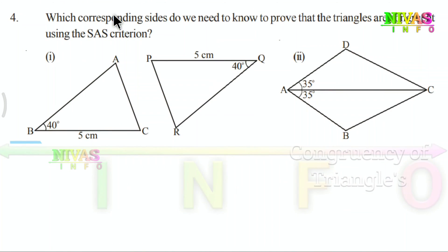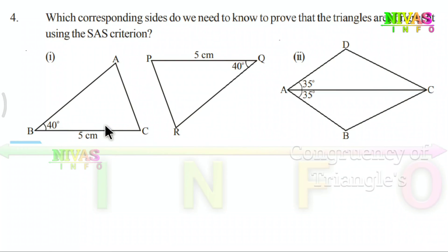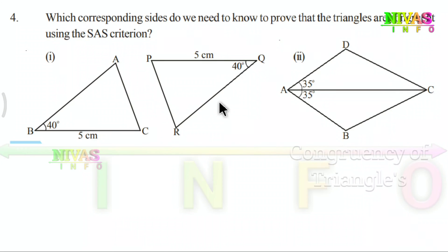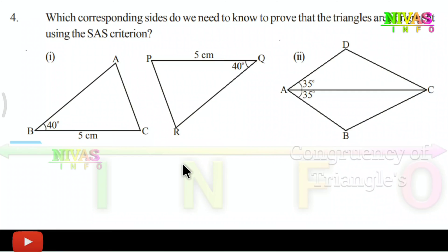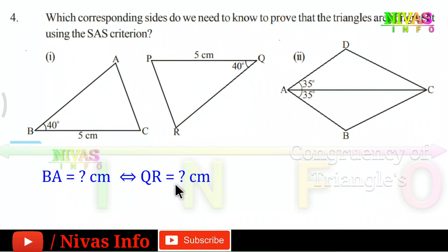We have the next question: Which corresponding sides do we need to know to prove that the triangles are congruent using the SAS criterion? Here we have two problems. We compare the same sides. First one: angle B is 40 degrees and angle Q is 40 degrees, so one angle is equal. Next, BC is 5 cm and QP is 5 cm, so one side is equal. We need one more side: AB equal to n centimeters and QR equal to n centimeters.